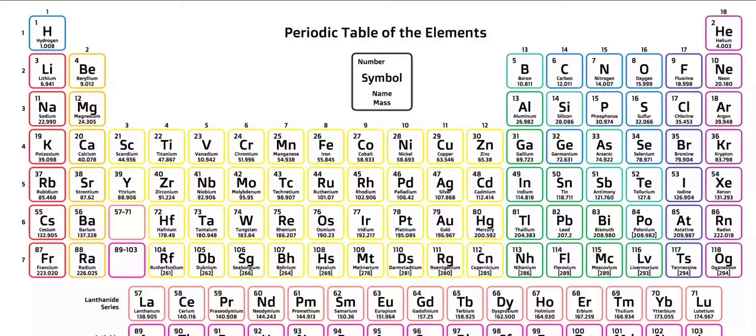Regardless of how many neutrons are present, each of these atoms has one and only one proton in the nucleus, and that is the defining characteristic of hydrogen.